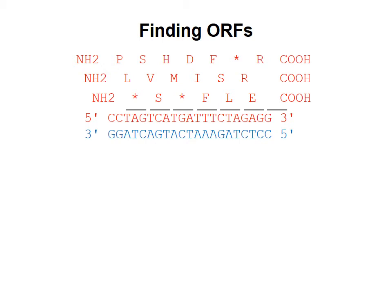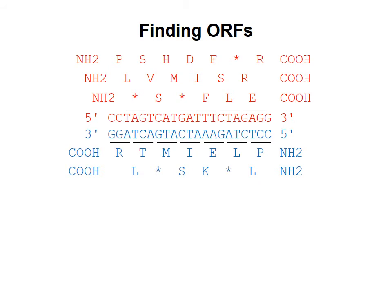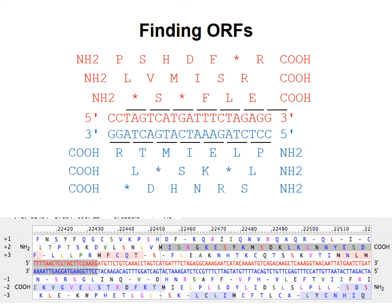We can do the same thing on the bottom strand, reading five prime to three prime from right to left in this diagram. Just as for the top strand, there are three possible open reading frames on the bottom strand. So for any region in the genome, we have to consider six possible open reading frames, any of which could encode for a protein.